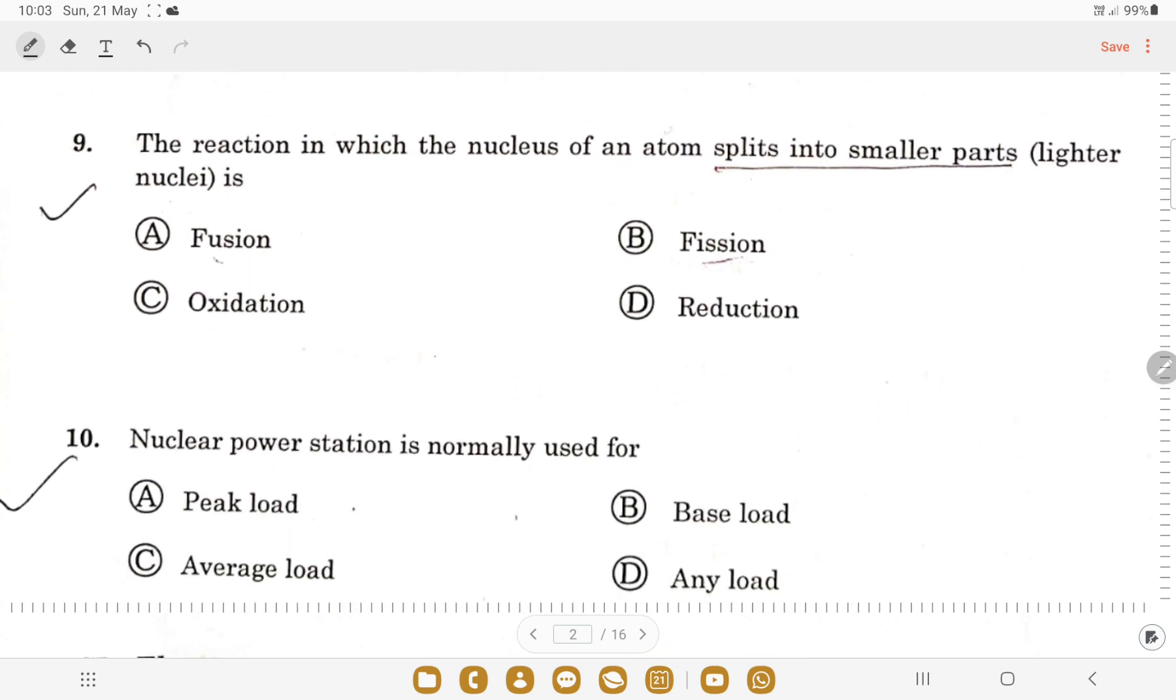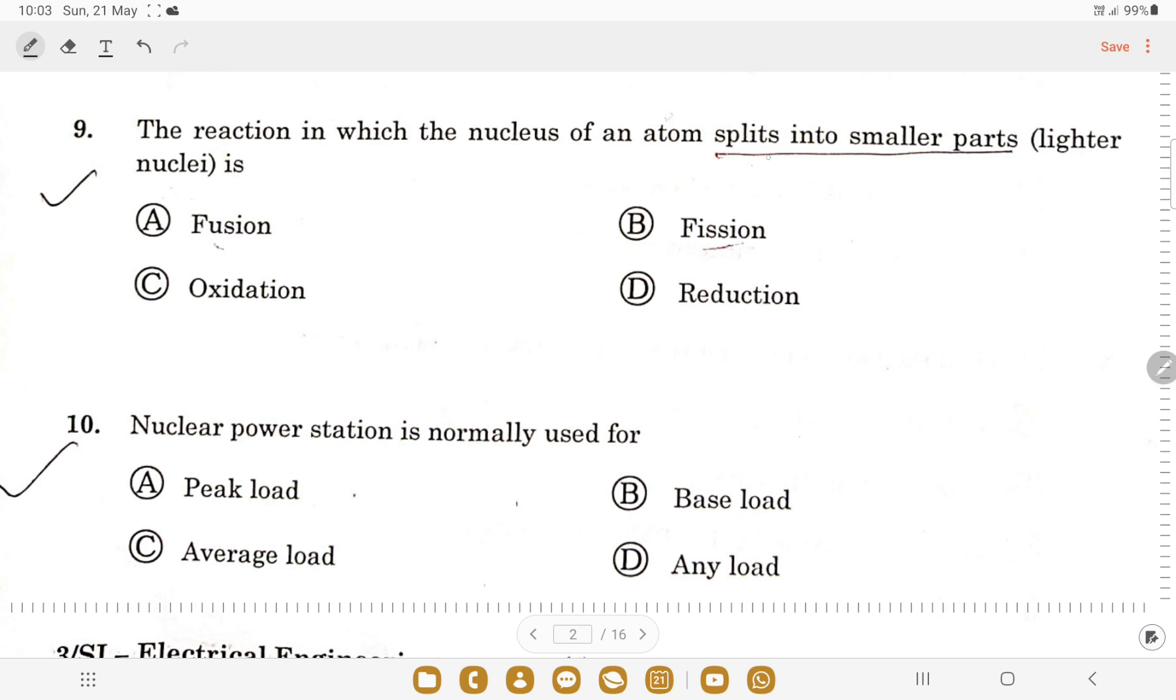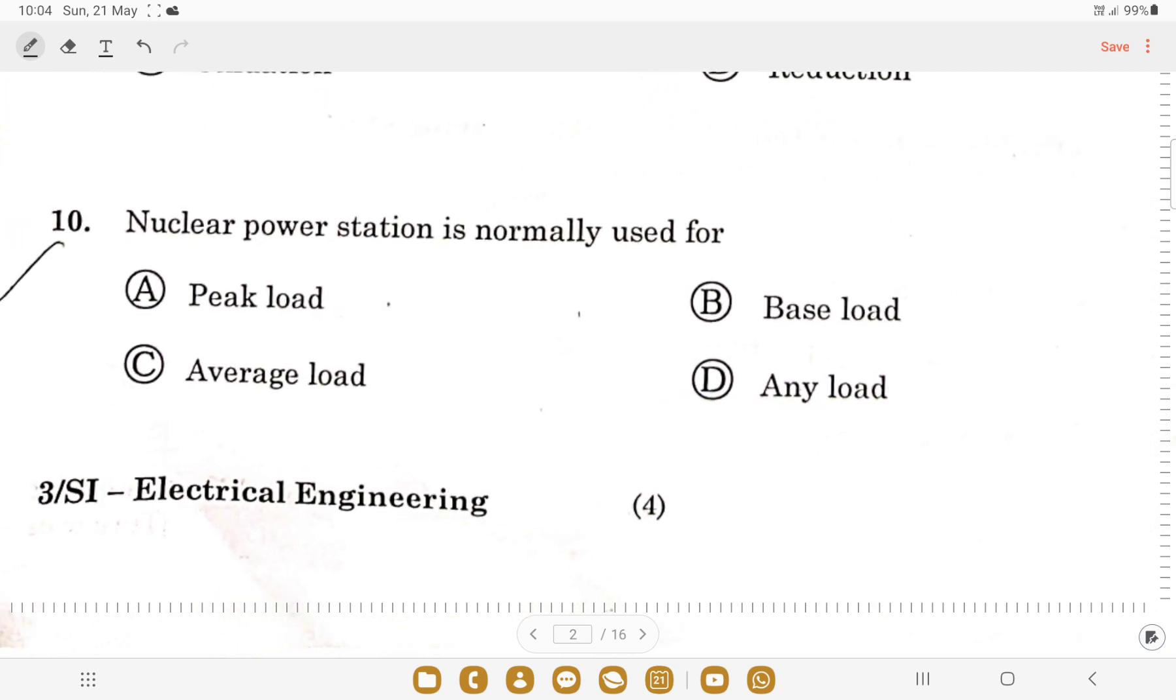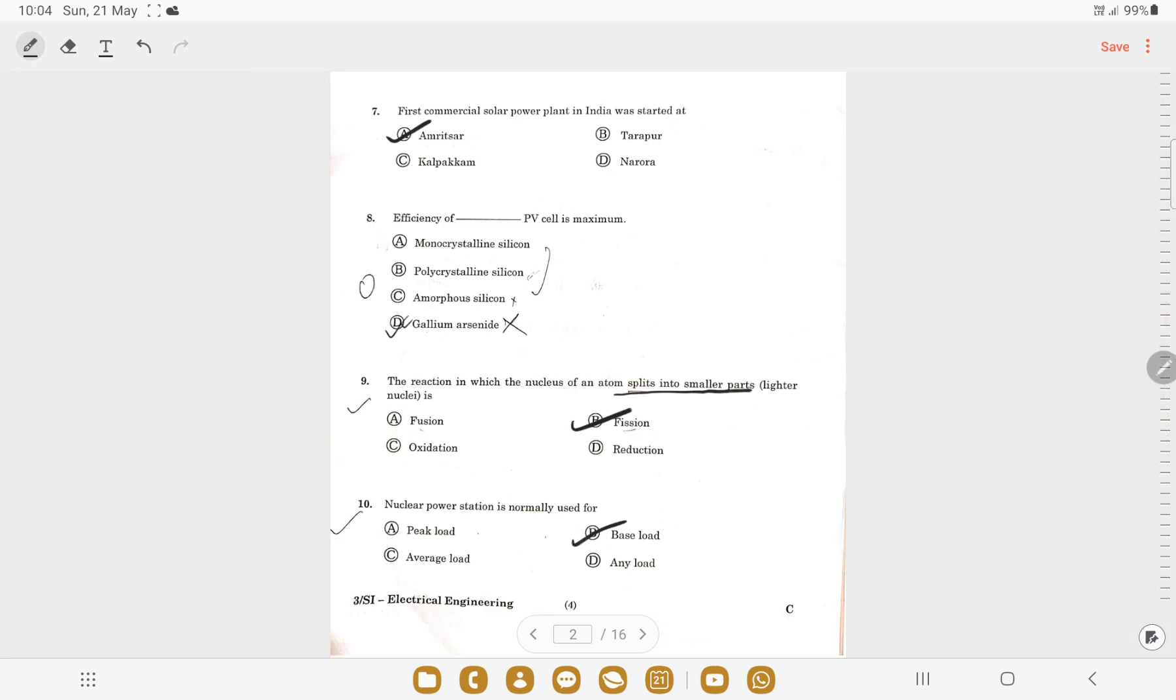Next question: the reaction in which the nucleus of an atom splits into smaller parts? When the nucleus of an atom splits into smaller parts, it is called fission - option B is the correct one. Fusion means when smaller parts are combined to form a larger one. Next question: nuclear power station is normally used for? We always use it for base load - option B is the correct one.